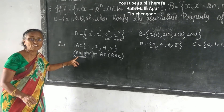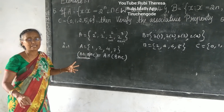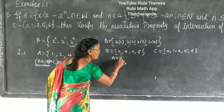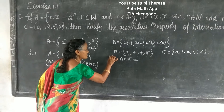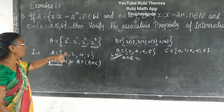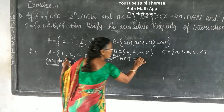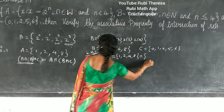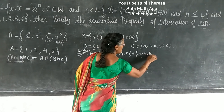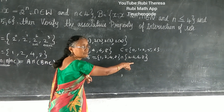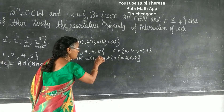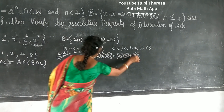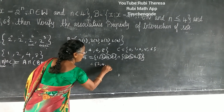We are finding A intersection B first, which is inside the bracket. A = {1, 2, 4, 8} intersection B = {2, 4, 6, 8}. Intersection means the elements common to both sets. So the common elements are 2, 4, and 8. Therefore A intersection B = {2, 4, 8}. Elements should be separated by commas in roster form.